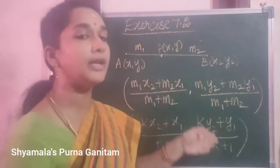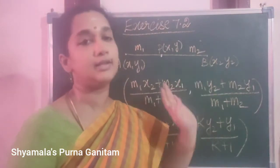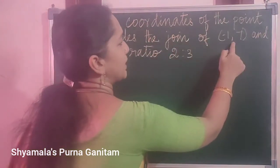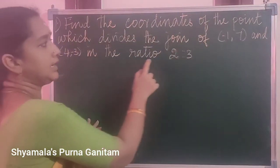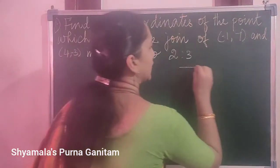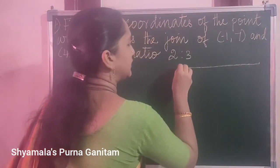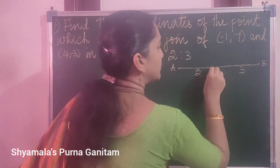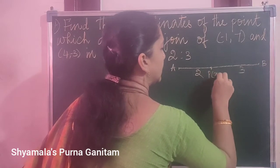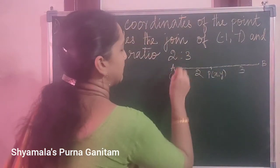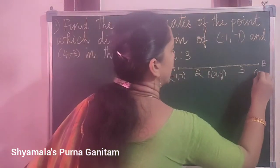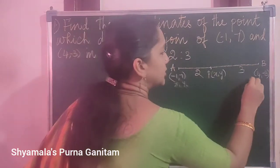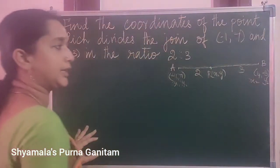All these formulas we will be applying in these exercises. Find the coordinates of the point which divides the join of (-1, 7) and (4, -3) in the ratio 2:3. So when you take a line segment, take that as A, B and the ratio is given as 2:3. This point you are asked to find — take it as (X, Y). Here A point is (-1, 7) and B point is (4, -3). Take this as X1, Y1 and this one as X2, Y2. Direct formula application sum only.